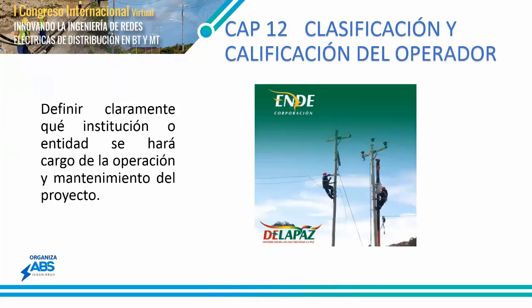Como Capítulo 12 está la clasificación y calificación del operador, donde se define claramente qué institución o entidad estará a cargo de la operación y mantenimiento. En mi caso, la empresa Distribuidora de Electricidad de La Paz tiene el área de concesión en el departamento de La Paz. Cuando nosotros ejecutamos un proyecto de electrificación rural, hacemos que la empresa distribuidora realice una inspección técnica para ver si se ha construido bajo su estándar constructivo. Una vez autorizado, le damos un contrato de operación y mantenimiento — nosotros construimos y ellos administran las redes y les implementan las acometidas.